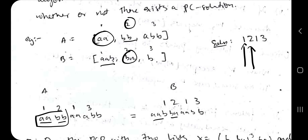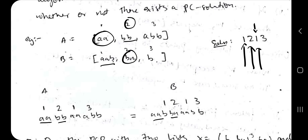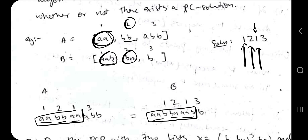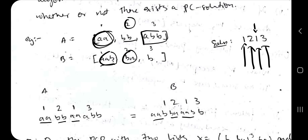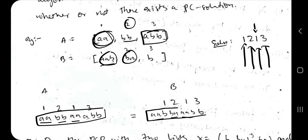For index 2: list A gives 'BB', list B gives 'BA'. Combined so far: A gives 'AABB', B gives 'AABBA' — not equal. Then index 1 again: A gives 'AA', B gives 'AAB'. Still not equal. Finally, index 3: A gives 'ABB', B gives 'B'. Now checking the whole combined string — both sides are the same. So the answer is 1, 2, 1, 3.